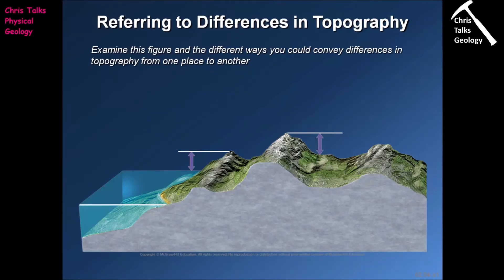Hello everybody, this is Dr Christopher White. In this presentation we're going to be thinking about how we define topography on the surface of the earth, and we're also going to start thinking about how geologists deal with the subsurface — essentially any rocks which are underground, so we can't get to them, touch them, look at them, or measure them. We have to use measurements taken on the surface to predict what happens to layers of rock in the subsurface. This presentation corresponds to section 2.4 in your textbook.